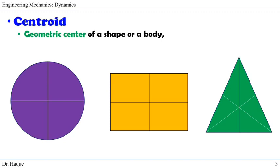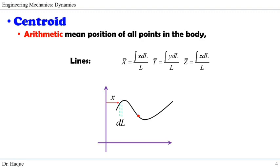And for triangles, you can also find it if you connect from one edge to the middle of the opposite line. Next, we said it is the arithmetic mean position of all points in the body. For example, if it's a line and you're trying to find the centroid of that line, you can find the centroid using that equation, referring to x, y, and z coordinates. How it works: if you consider the line and you know the x distance from a reference line and a differential segment dl, you do the integration divided by the total length of the line and you can find the centroid position with respect to the x reference.